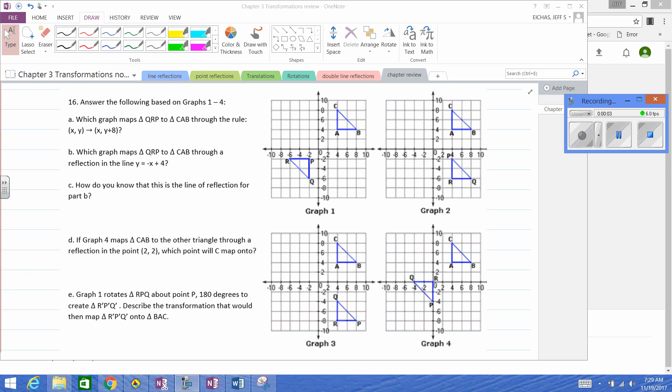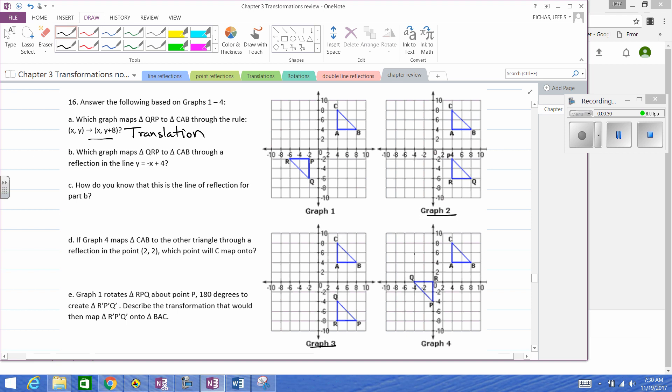Okay, so here's more of the solutions to our review packet. Checking out part A: which of the graphs maps to the rule? This is a translation notation, but we're going to go through it. It looks like it could be graph two or graph three. Graphs one and four look like they're rotations.